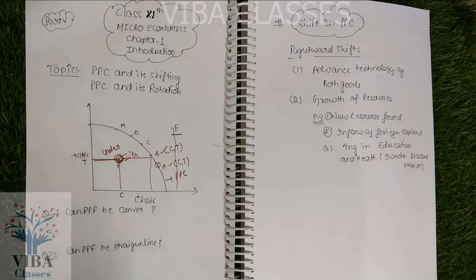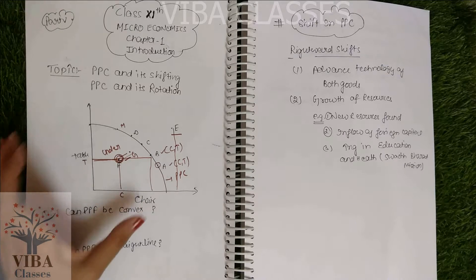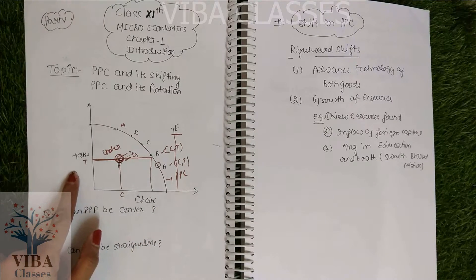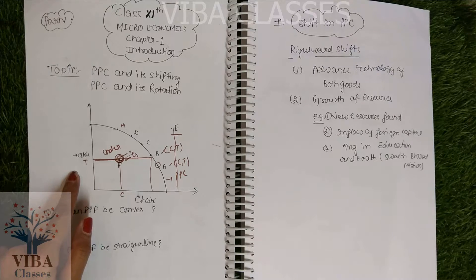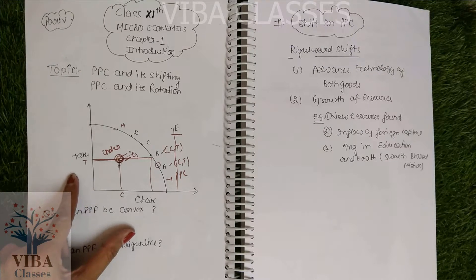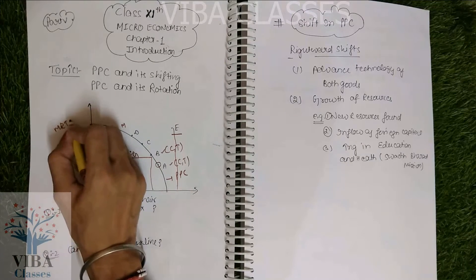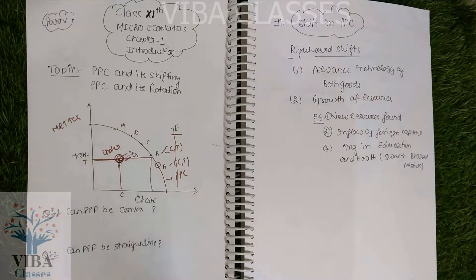If you remember, PPC is downward sloping. I also told you all the features — what downward sloping and upward sloping mean. So if asked what the shape of PPC is or its features: first, PPC is downward sloping. Why? Because if you want to increase one commodity, you have to sacrifice the other, because you have limited resources — we cannot increase both simultaneously. Second feature: it is concave in nature. Why? Because MRT increases — the sacrificing ratio keeps increasing.